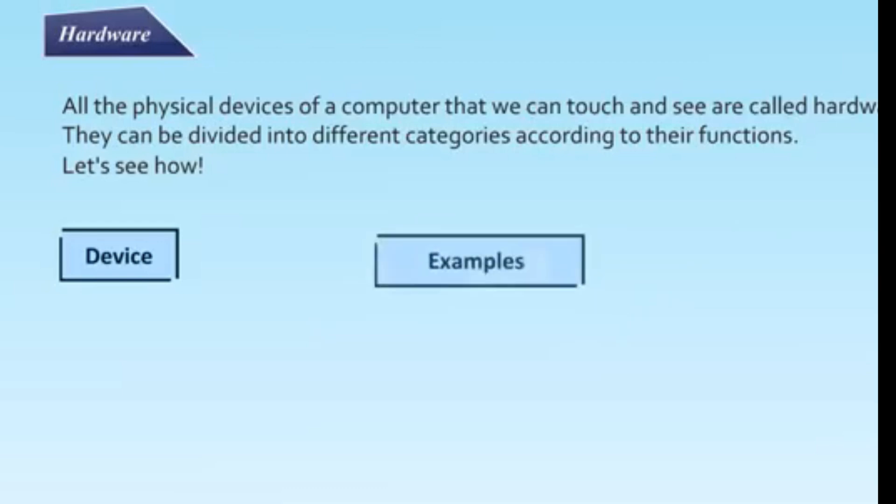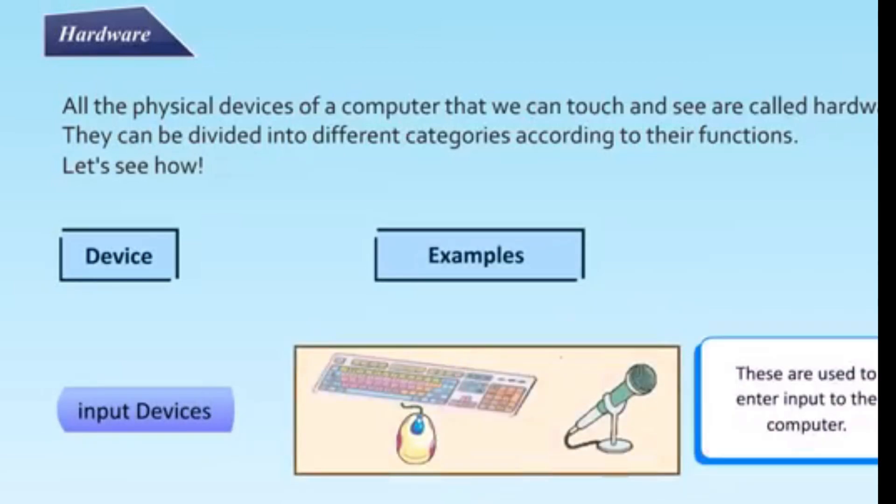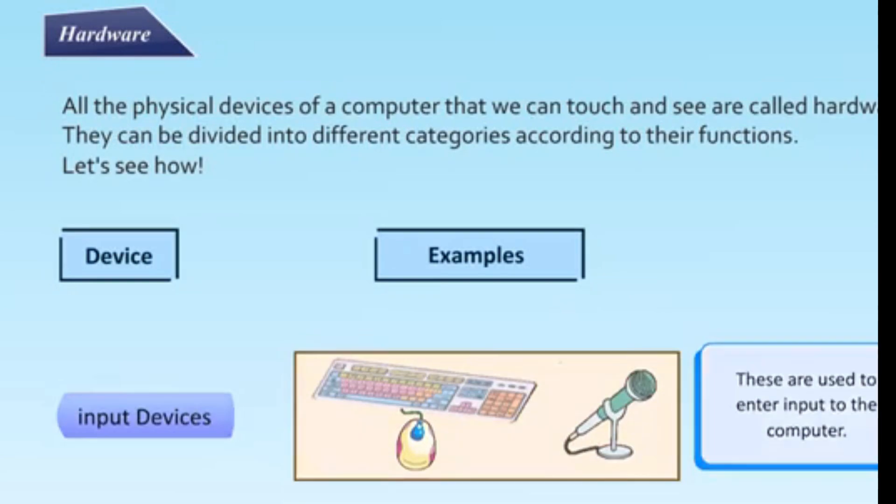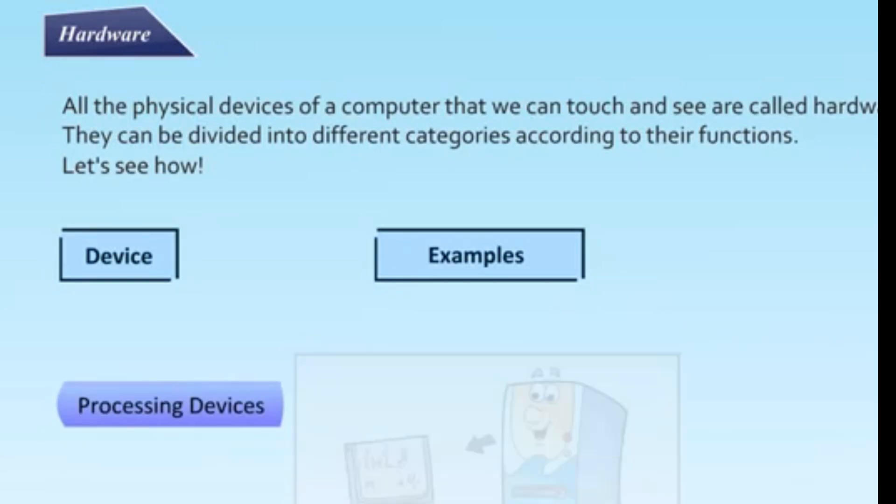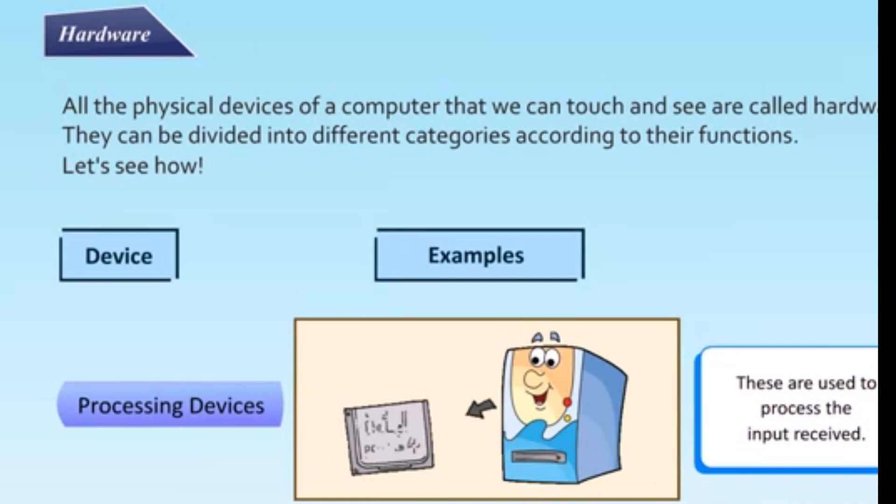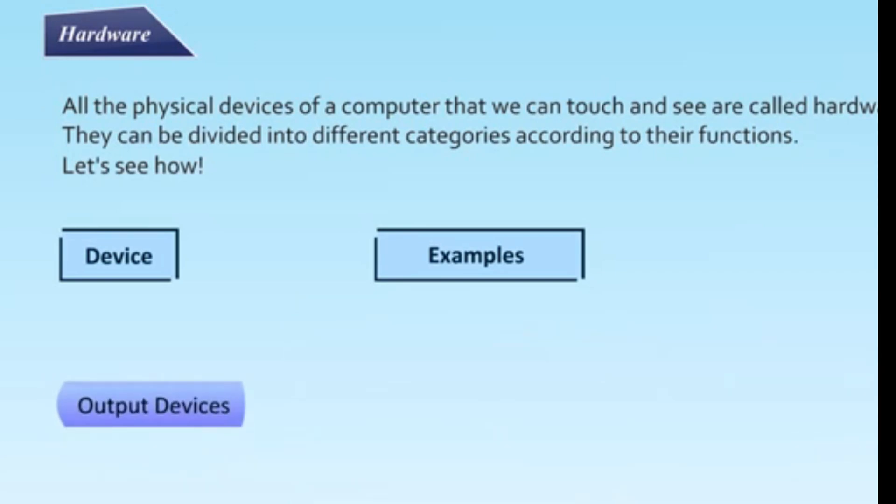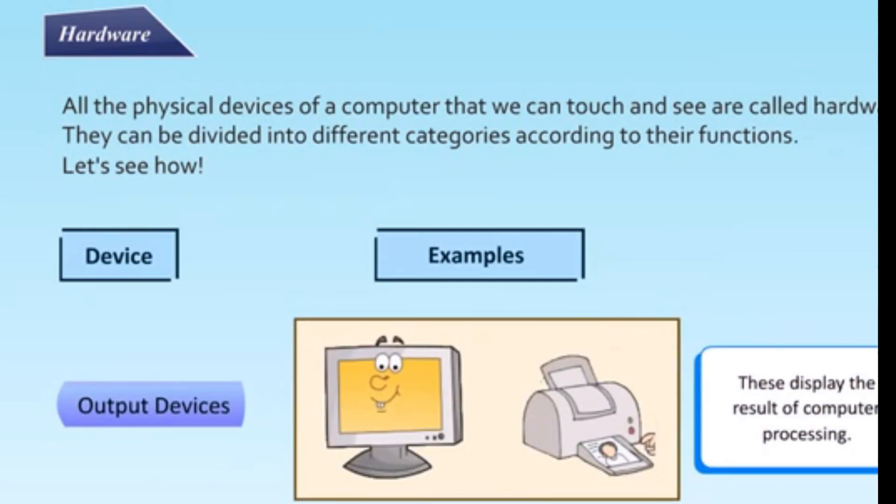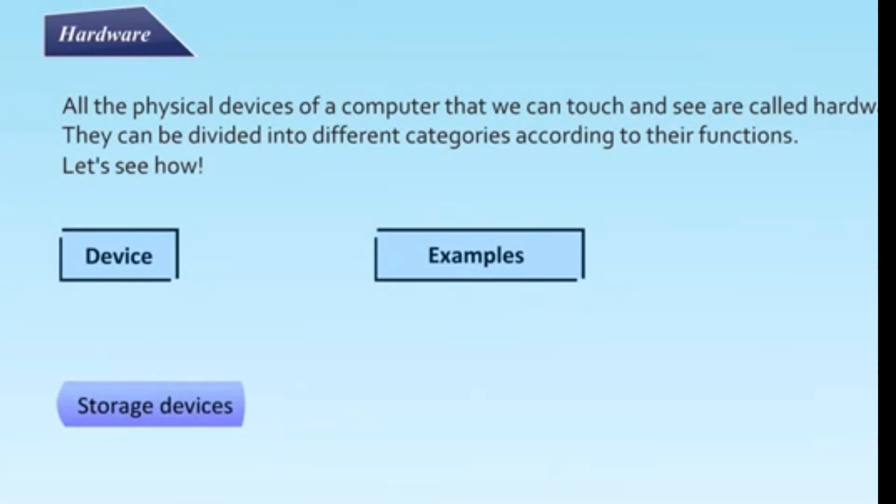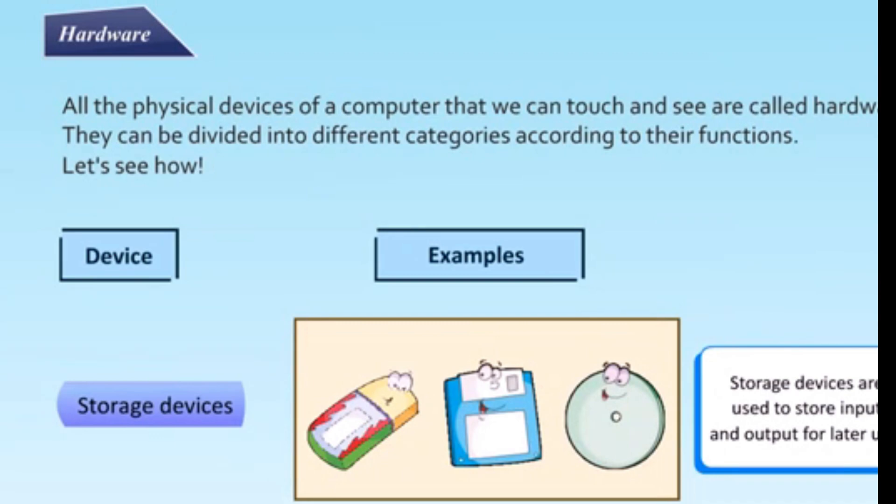Device example. Input devices: these are used to enter input to the computer. Processing devices: these are used to process the input received. Output devices: these display the result of computer processing. Storage devices: storage devices are used to store input and output for later use.